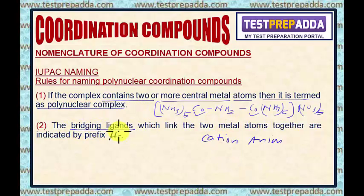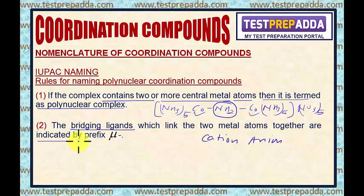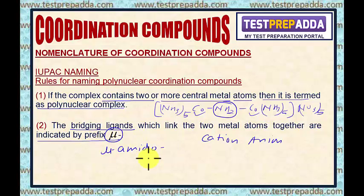When it is a bridging ligand in a polynuclear coordination compound, the bridging ligands which link the two metal atoms together are indicated by the prefix mu. In this case, this NH2 is the bridging ligand. The normal name of NH2 is amido, but now it is a bridging ligand, so the name will be mu-amido. Mu-amido will be the name of this bridging ligand.